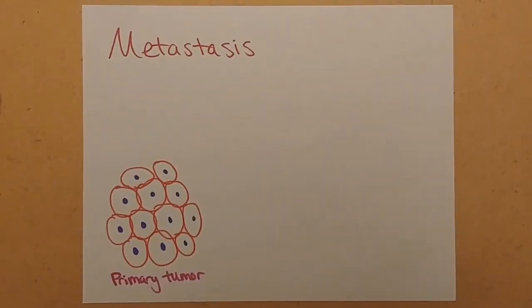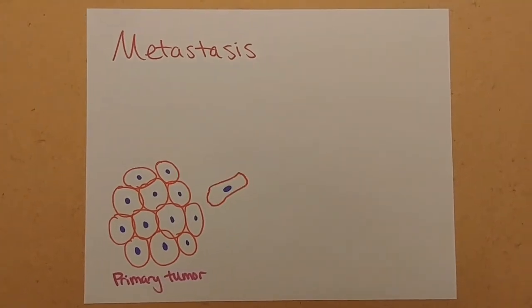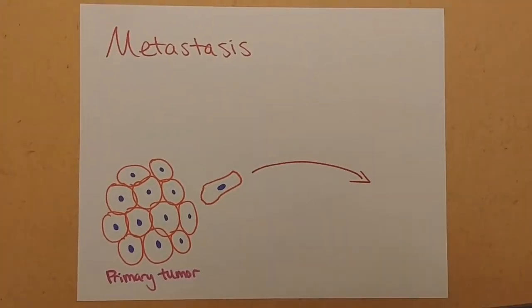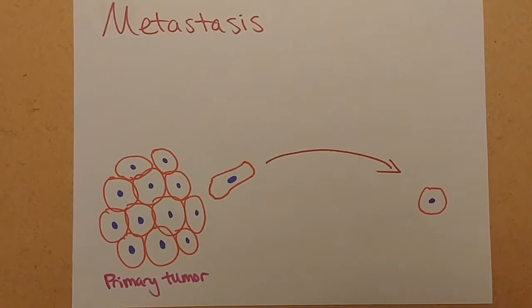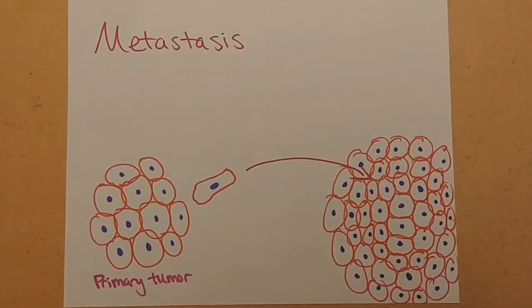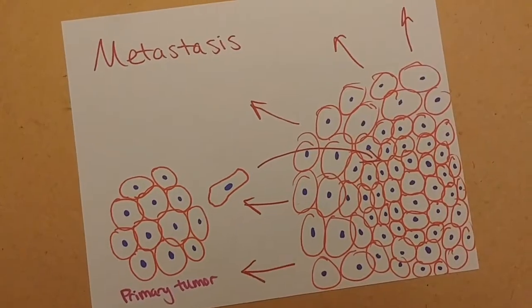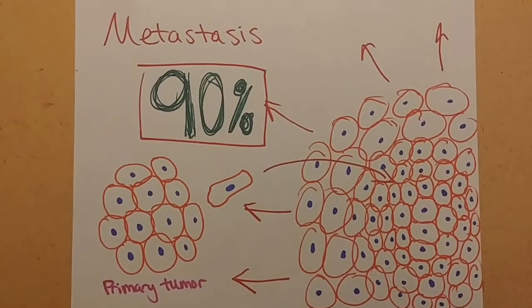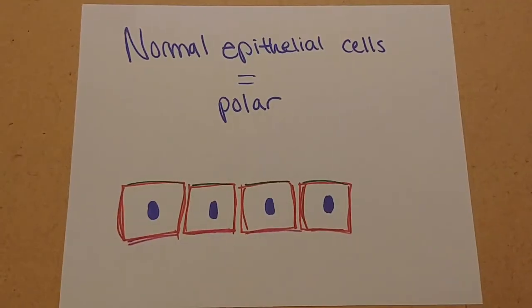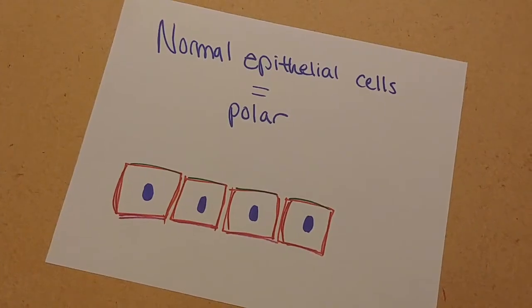In metastasis, cancer cells from primary tumors break away, travel through the circulatory system, and form new tumors in other parts of the body. Metastatic disease is responsible for over 90% of cancer deaths as the subsequent tumors take over surrounding tissue. These invasive cells that migrate and invade are not normal epithelial cells, but mesenchymal cells that underwent the EMT.